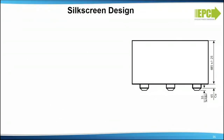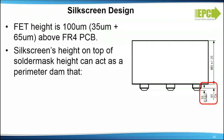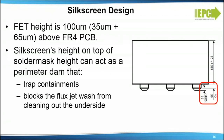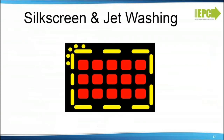Silkscreen design: the mechanical drawing shows a side view of one of EPC's lowest profile FETs. The FET height is 100 micrometers above the FR4 board. Silkscreen height on top of solder mask height can act as a perimeter dam that traps contaminants or blocks the jet wash from clearing the underside. Dashing the silkscreen line allows wash access and drainage. The jet wash can pass the silkscreen dam and exit out the other side.